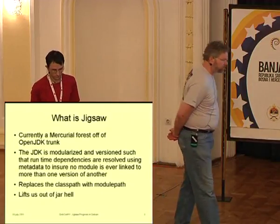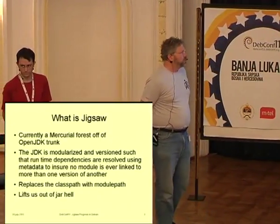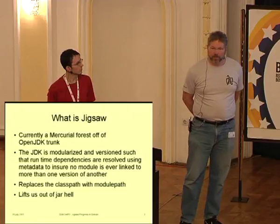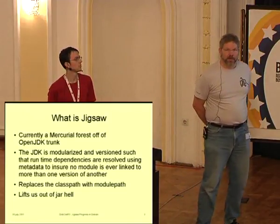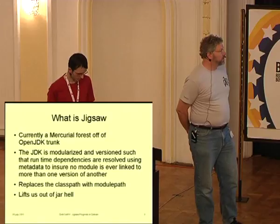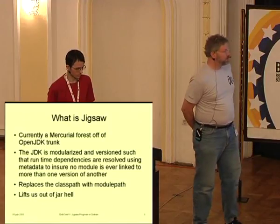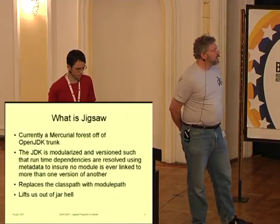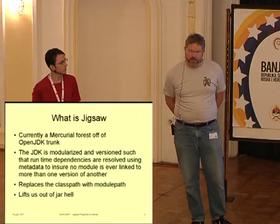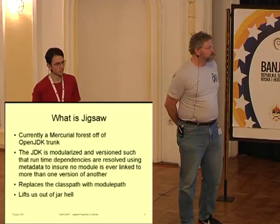So first of all, what is Jigsaw? Jigsaw is the modularization of the JDK. The way that upstream handles version control is they use Mercurial as a VCS and maintain a number of different forests for different parts of the project. There's one which is the Mercurial forest for Jigsaw, which is the name of the modular JDK. The idea is basically to break apart the JDK into multiple interdependent parts, mainly because the JDK has grown over time and has become quite massive.